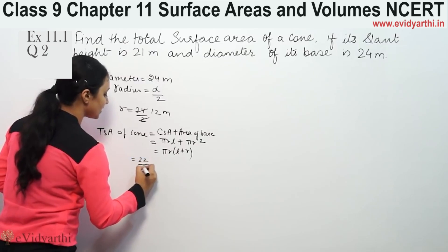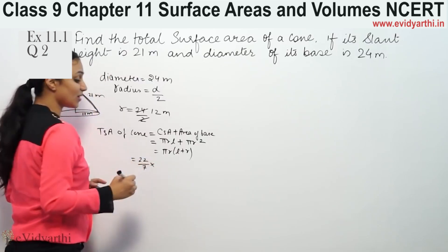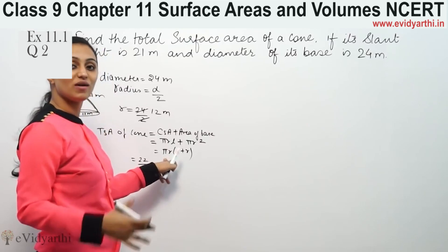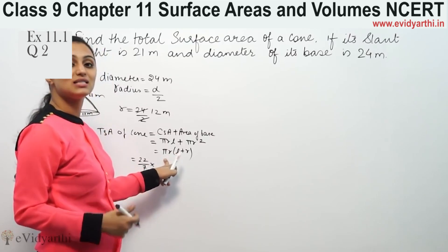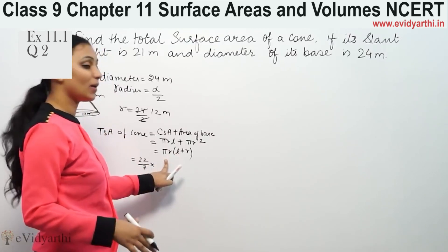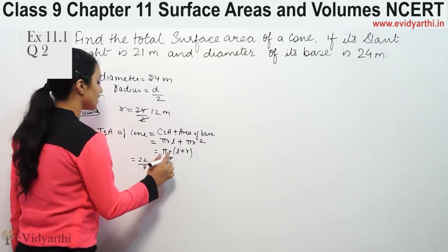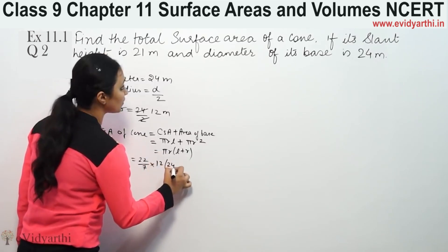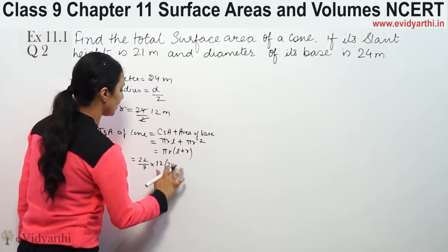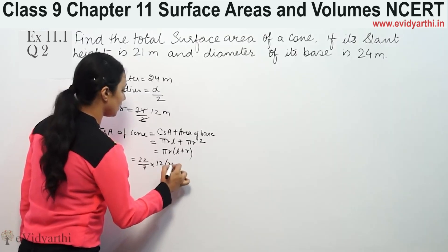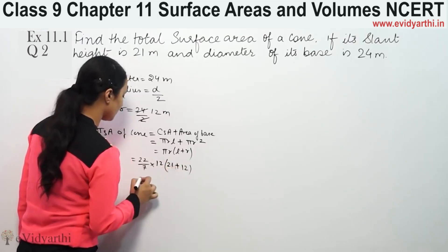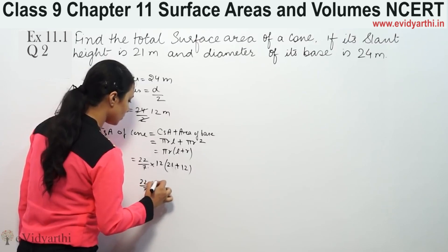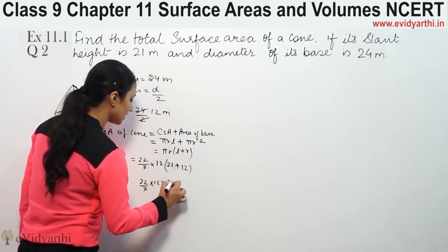The value of pi is 22 by 7. If no value is given in the question, we take 22 by 7; otherwise, use whatever value is given, whether 3.14 or 22 by 7. Radius is 12, slant height is 21, and l plus r equals 21 plus 12 which is 33. So we have 22 by 7 into 12 into 33.